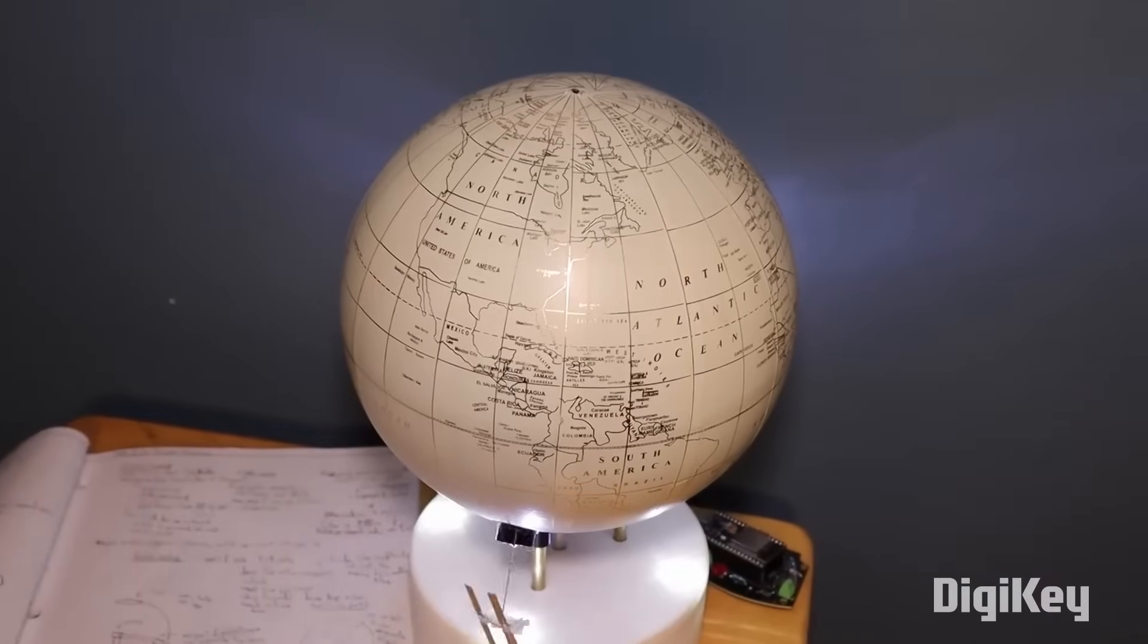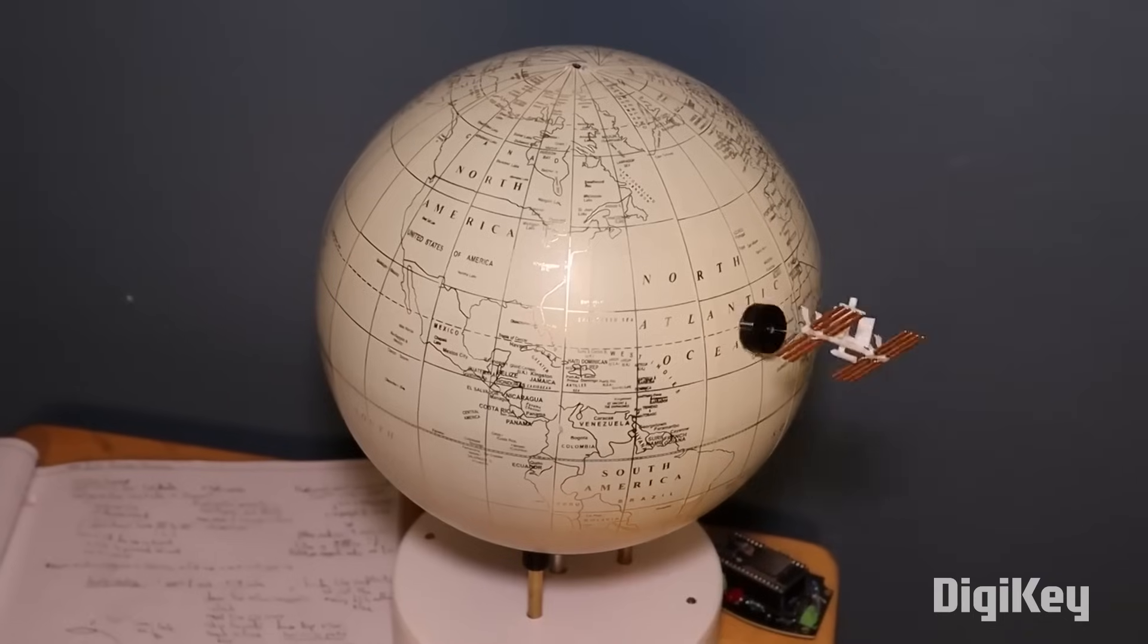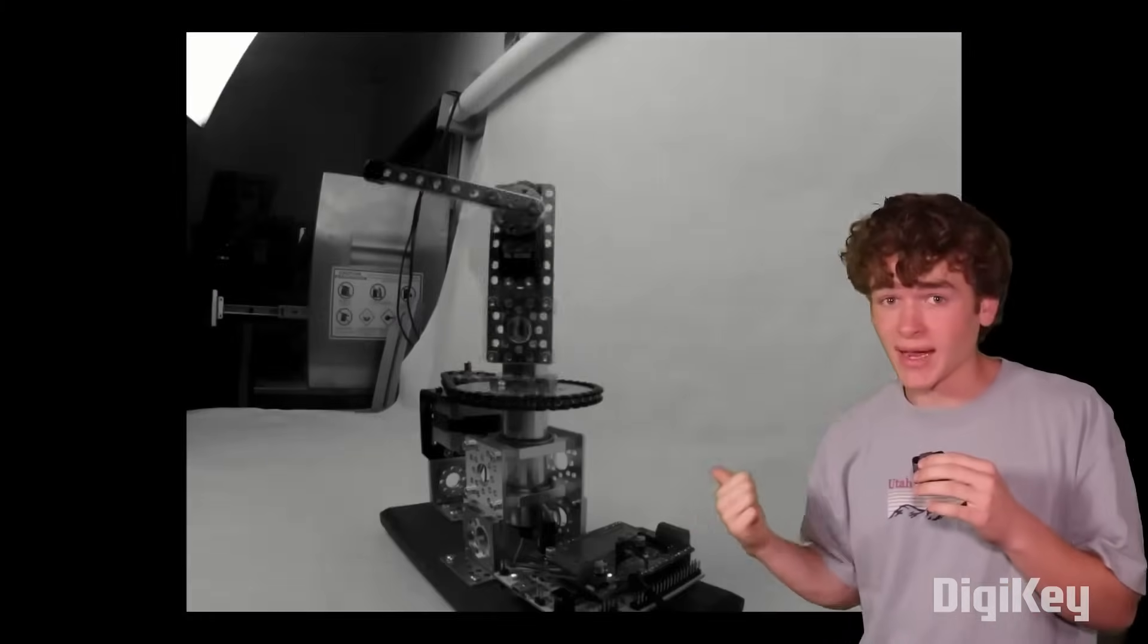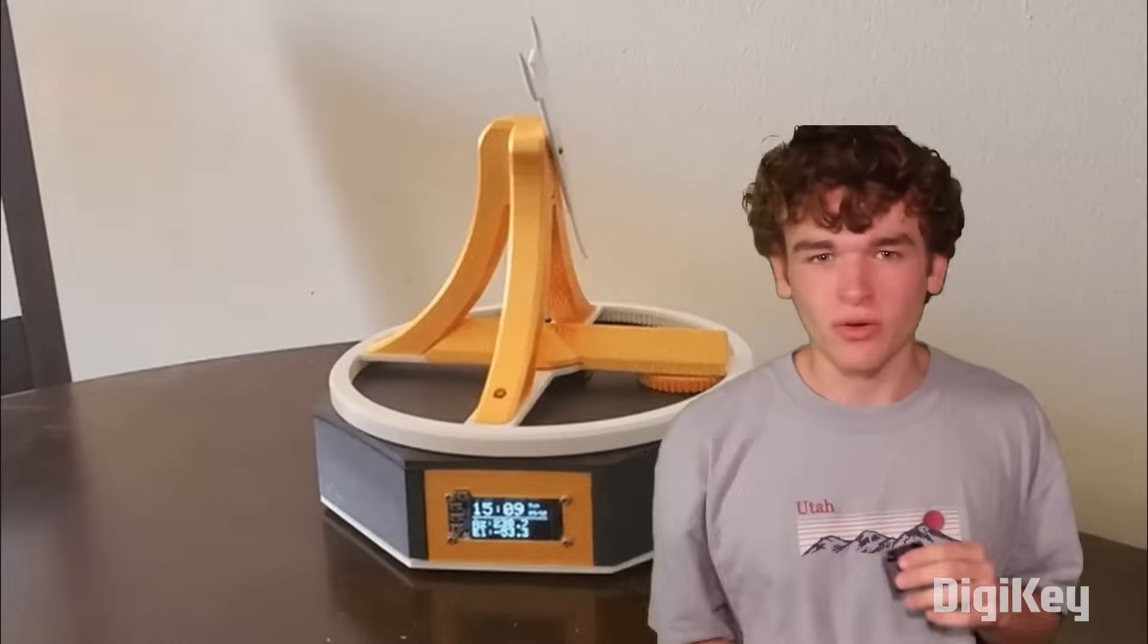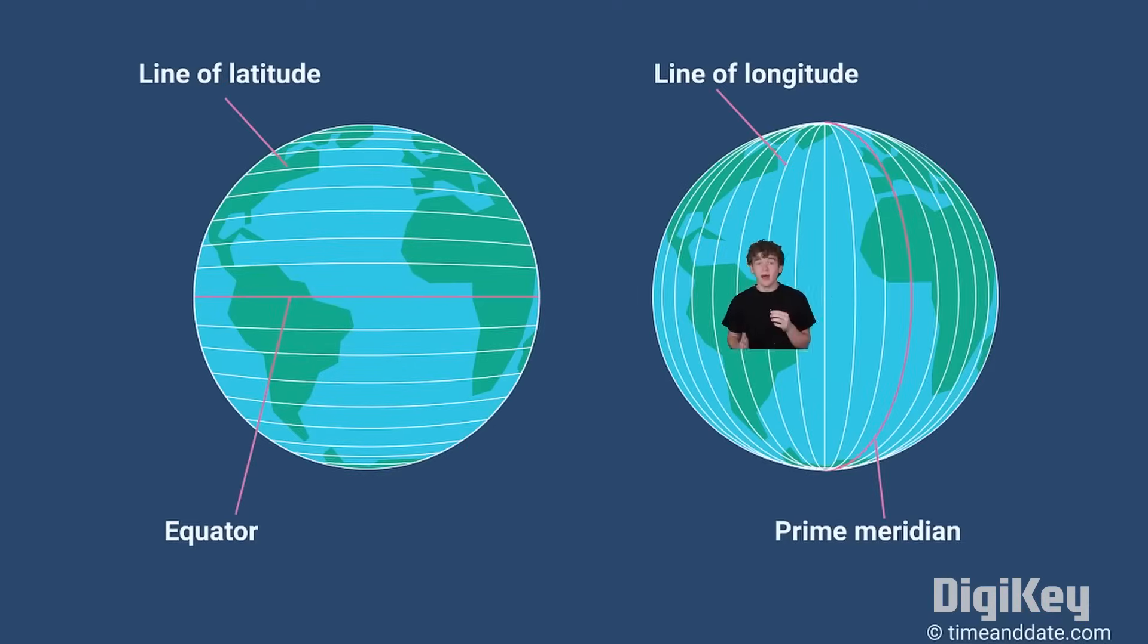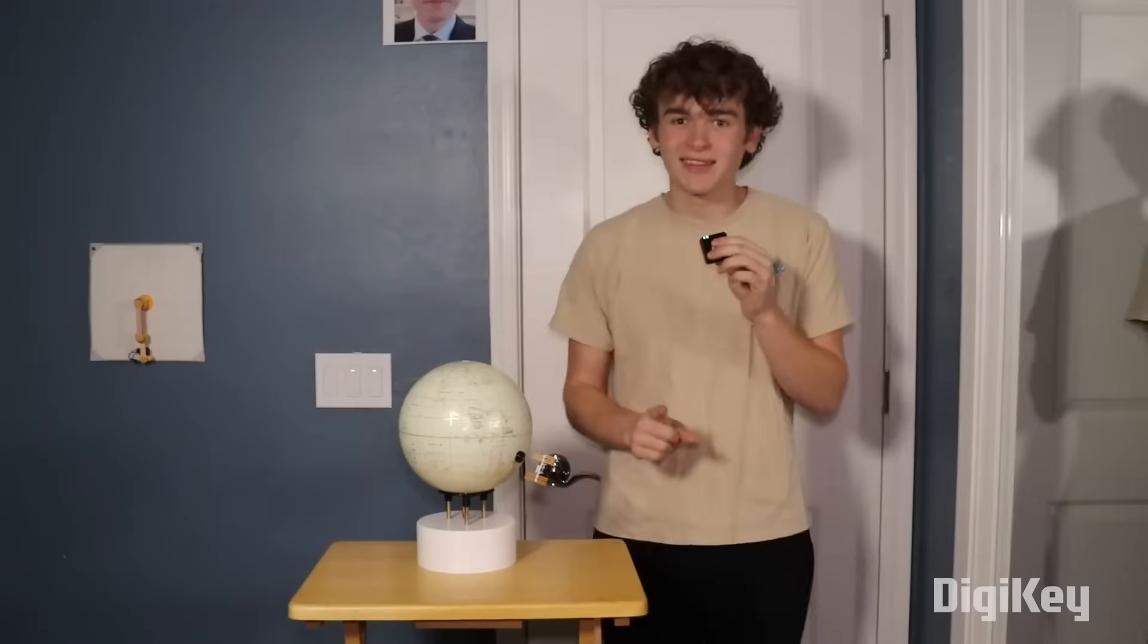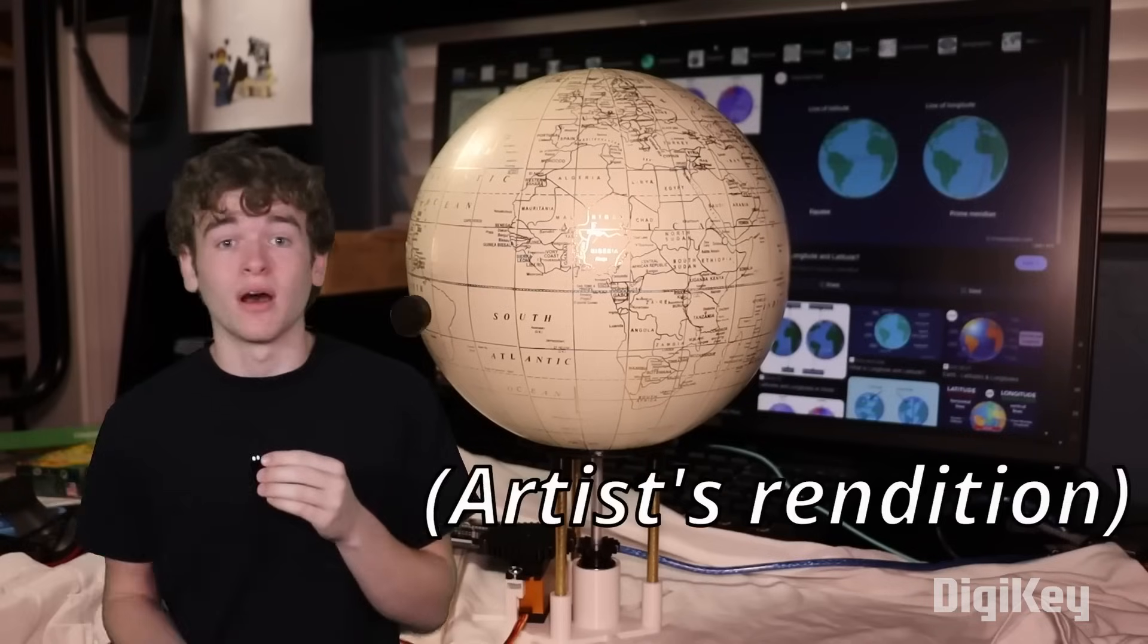ISS trackers aren't particularly new or novel. They're an entire category of maker project, and if you're a bit of a space nerd, making one is almost a rite of passage. But they're usually a two axis arm that swivels around, pointing at where the station is in the sky. But not this one by Wills Builds. This is a globe with a tiny model of the ISS moving around the surface, right where the station should be.